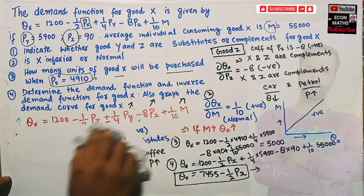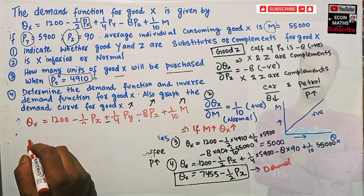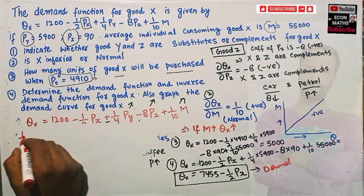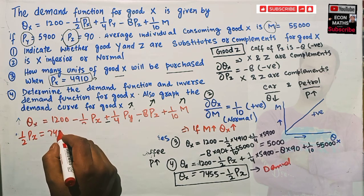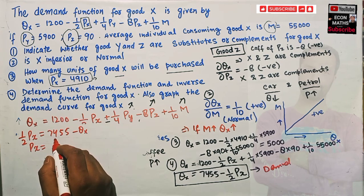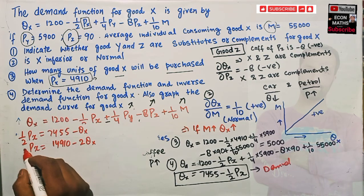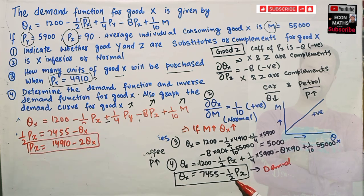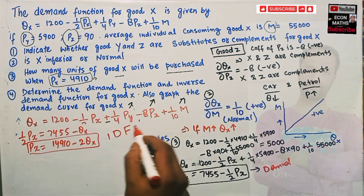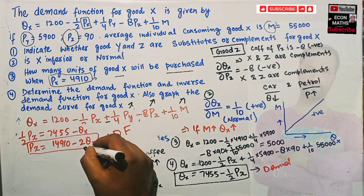To find the inverse demand function, we solve the demand function for price. Starting from QX = 7,455 - 1/2 PX, we transpose to get 1/2 PX = 7,455 - QX. Multiplying both sides by 2 gives us PX = 14,910 - 2QX. This is the inverse demand function — we get it by solving the demand function for price.